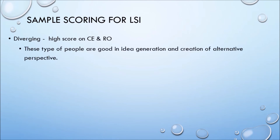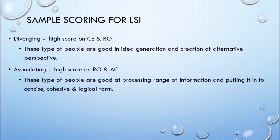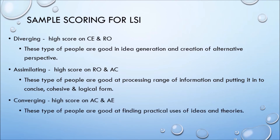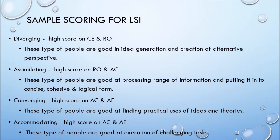Diverging — high score on CE and RO: these people are good at idea generation and creation of alternative perspectives. Assimilating — high score on RO and AC: these people are good at processing a range of information and putting it into concise, cohesive, and logical form. Converging — high score on AC and AE: these people are good at finding practical uses of ideas and theories. Accommodating — high score on AE: these people are good at execution of challenging tasks.